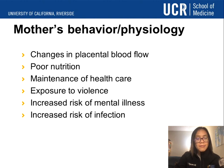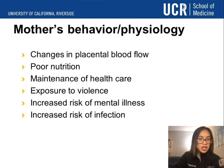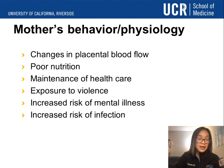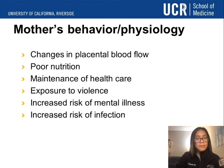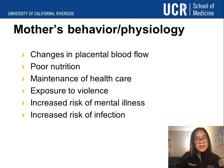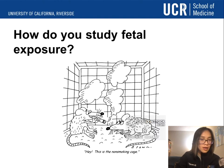A mother's behavior and physiology can have a very important impact on a child. We know it changes placental blood flow, and poor nutrition for a mother can affect the child, as she is the main source of a fetus's nutrition. The mother's health, exposure to violence, increased risk of mental illness, and increased risk of infection also strongly affect the fetus.